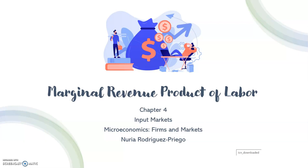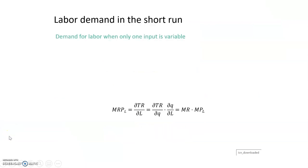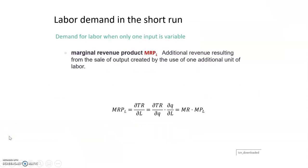This is the second video of chapter 4, input markets. In this video we are going to talk about the marginal revenue product of labor — a concept we already introduced in the last video. The marginal revenue product of labor is defined as the additional revenue resulting from the sale of output created by the use of one additional unit of labor.